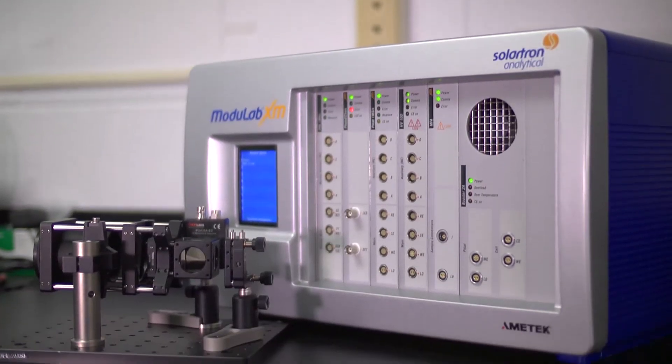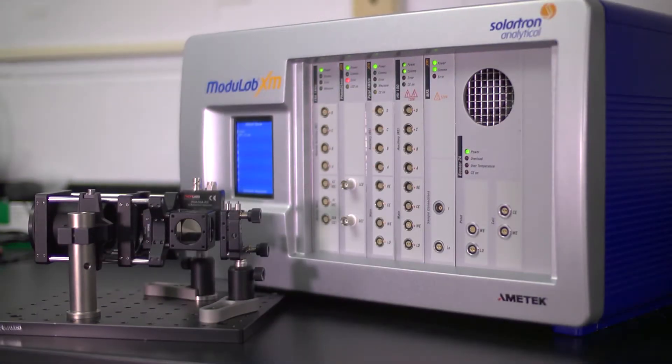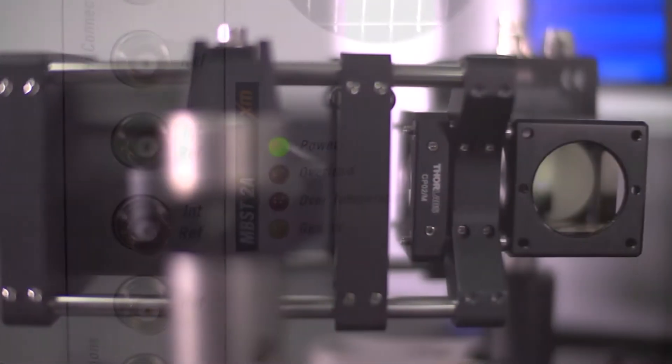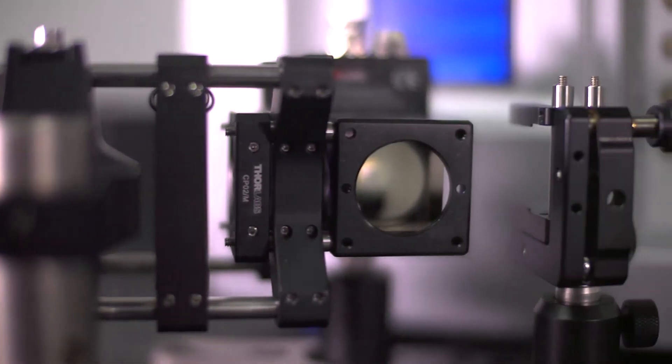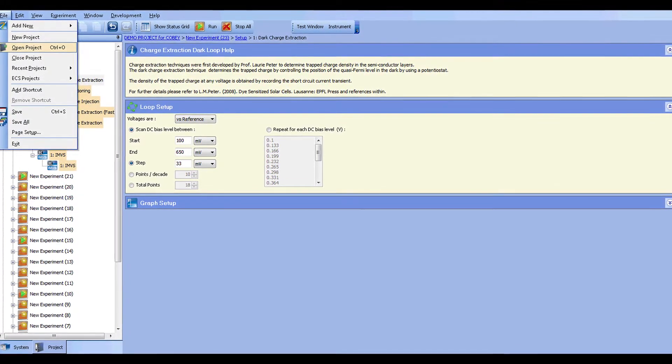Modulab XM Photo eChem is the only photo electrochemical system on the market, enabling a full spectrum analysis and characterization of photo electrochemical devices and materials with a fully automated data analysis package. No previous knowledge of frequency domain technique required.